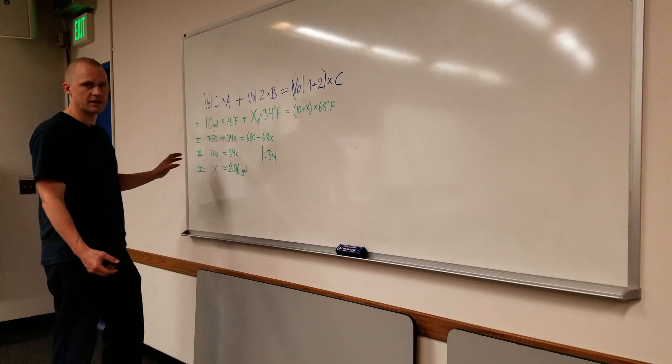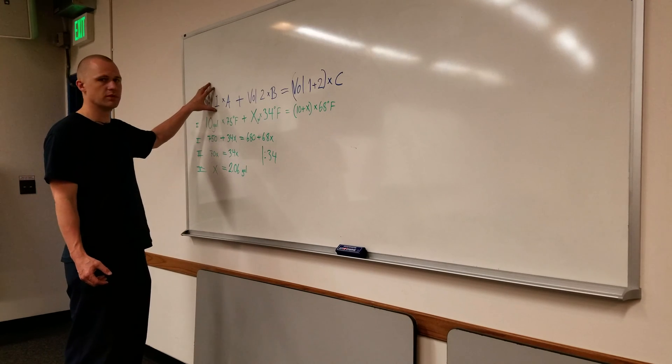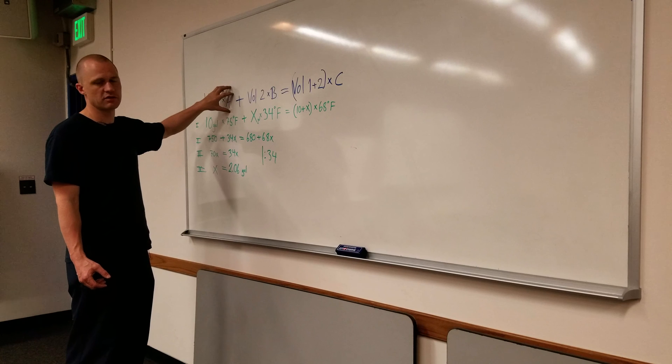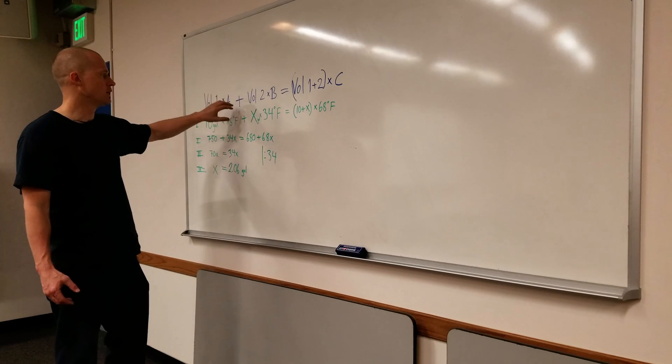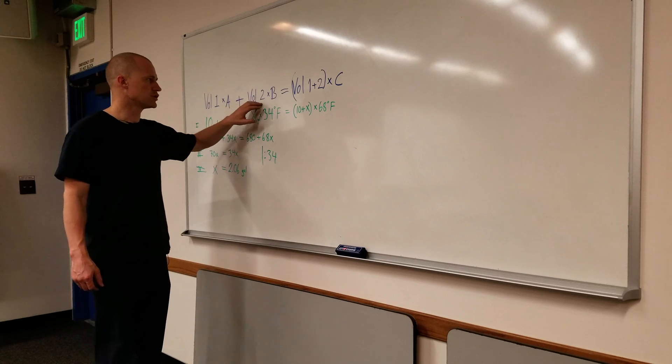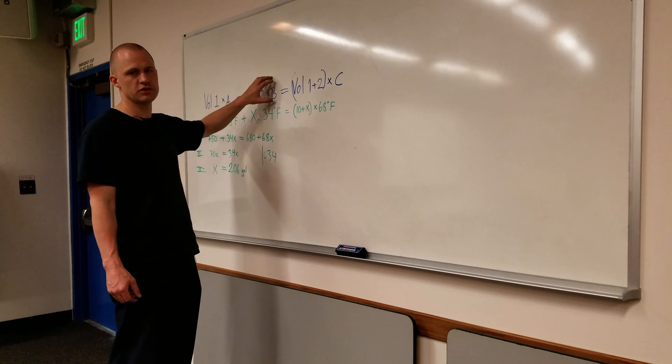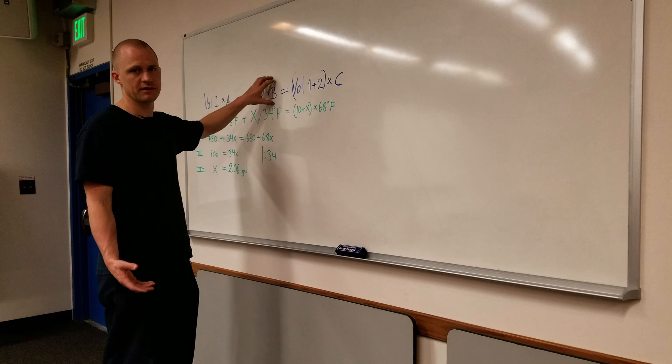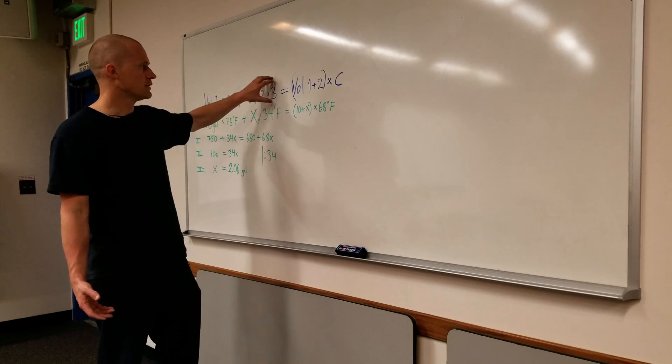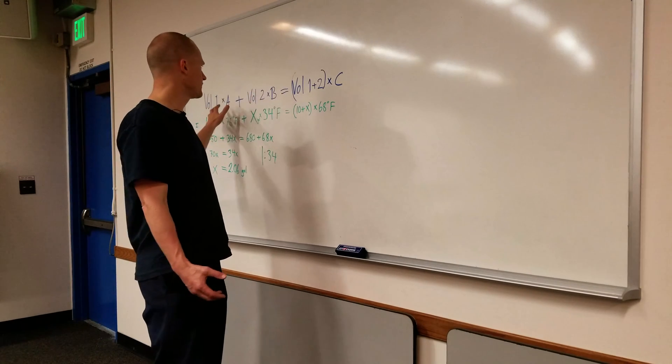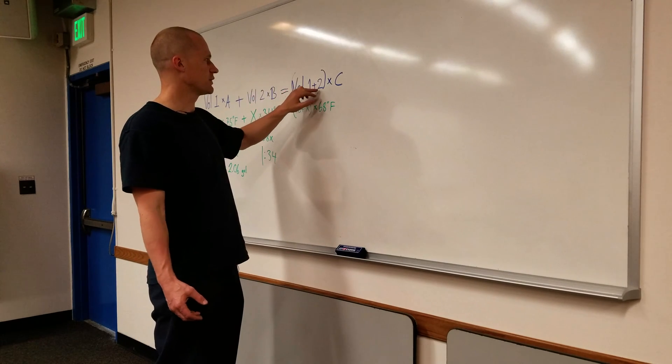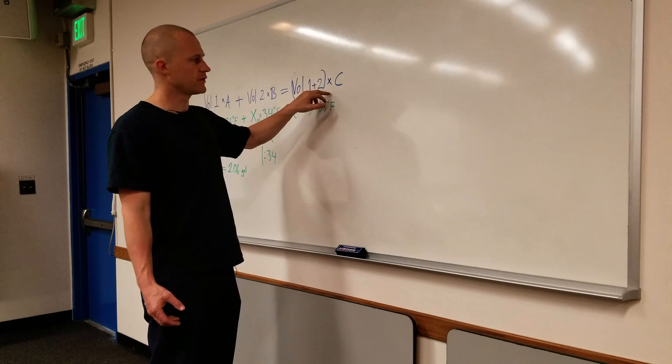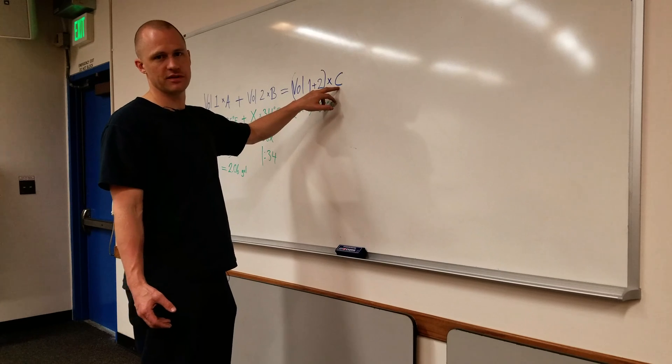First, the formula is very easy. You just take one volume, multiply by something—it could be temperature or how much sugar is in it, alcohol, anything—plus a volume number two and whatever the temperature or sugar or whatever you're talking about is in that volume. That's going to equal these two added together, the two volumes, so volume one plus volume two times whatever the outcome is going to be.